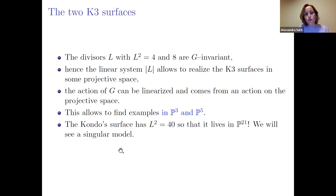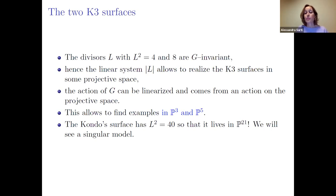Kondo's surface has polarization of degree 40 — it lives in P²¹ — so it is harder to describe directly. If there is time at the end I'll give a singular model using A₁ singularities. Since these surfaces have Picard number 20, they are isolated points in the moduli space; there is only one for each group.